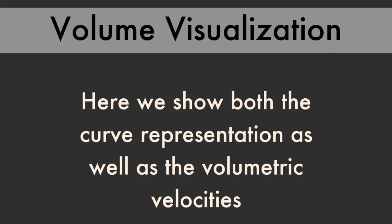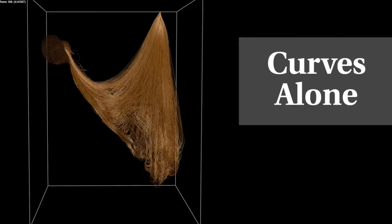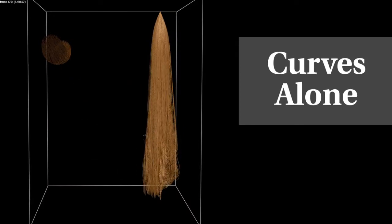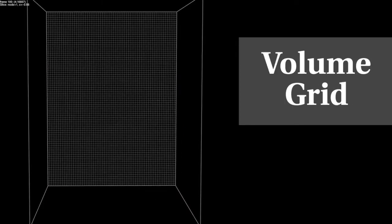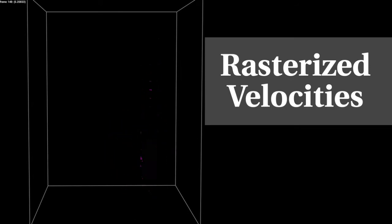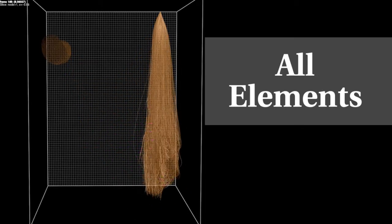Here we show the Lagrangian curves and their motion compared to the Eulerian grid velocities. Now we show both elements superimposed.